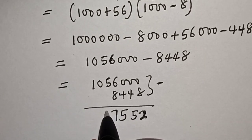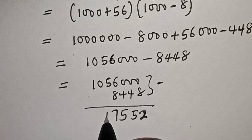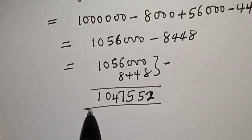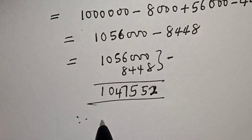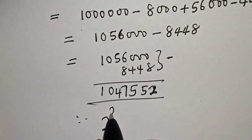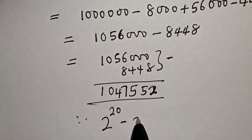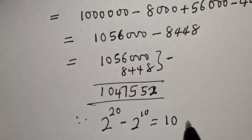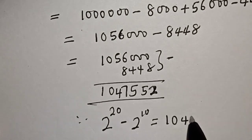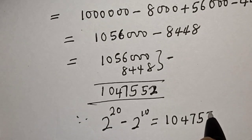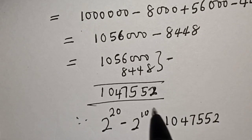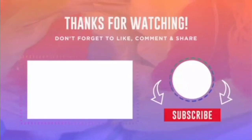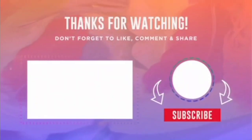That's our final answer. Therefore, 2 raised to power 20 minus 2 raised to power 10 is equal to 1,047,552. If you enjoyed the class, please don't forget to like, share, comment and subscribe. Thank you.